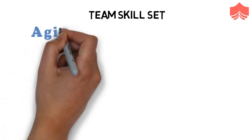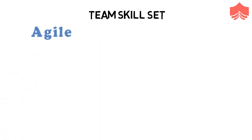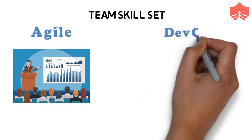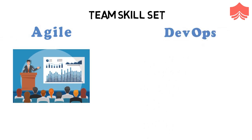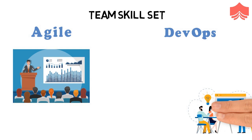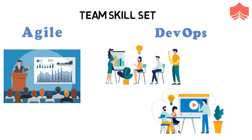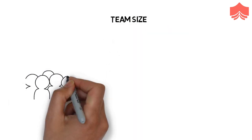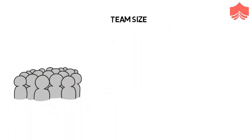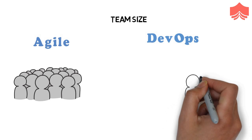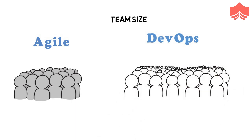Team skill set. Agile development emphasizes training all team members to have a wide variety of similar and equal skills. DevOps divides and spreads the skill set between the development and the operation teams. Team size. Small team is the core of Agile — the fewer people on it, the faster they can move. DevOps has a relatively larger team size as it involves all the stakeholders.